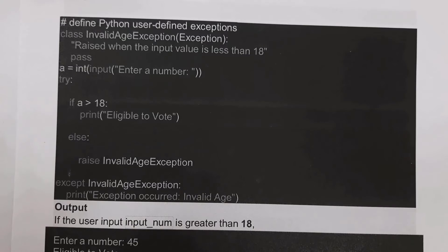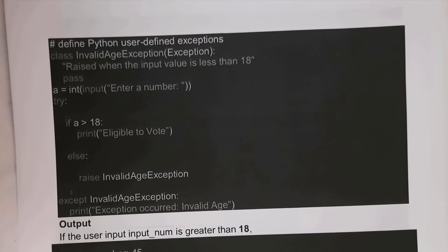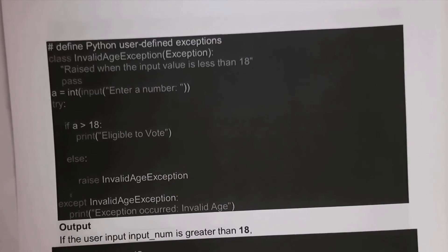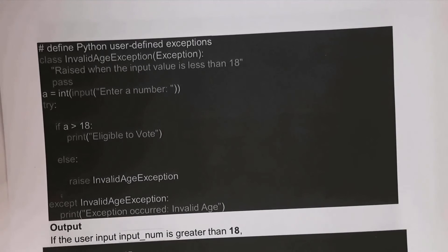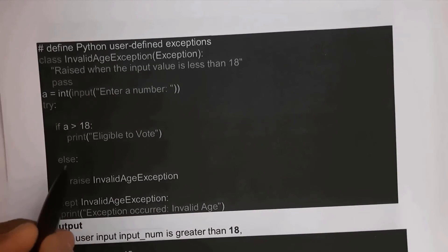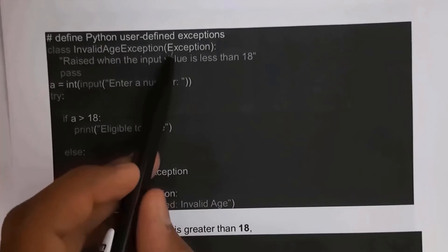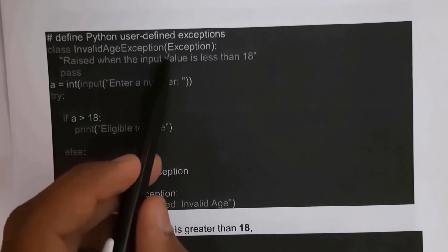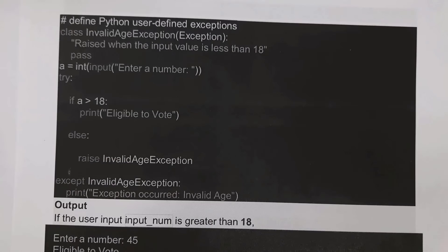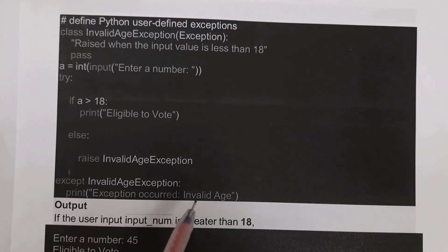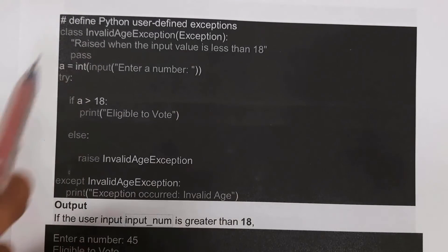Inside the except block I written: print('exception occurred: invalid age'). Follow correct indentation or it will display an error — keep the same indentation for the try and except blocks, and match the indentation of if and else inside the try block. Also note that for the built-in Exception class, E must be capital; a lowercase e will display an error.